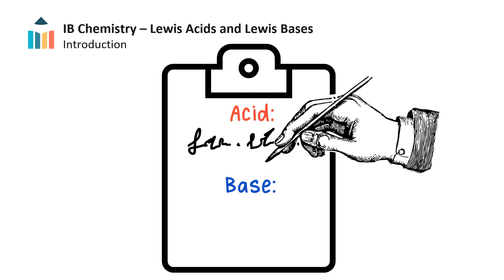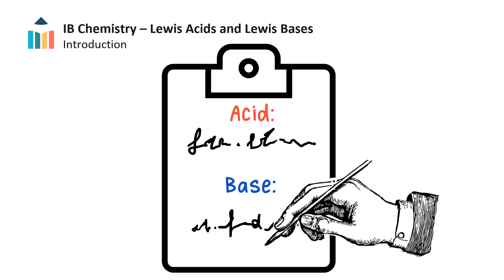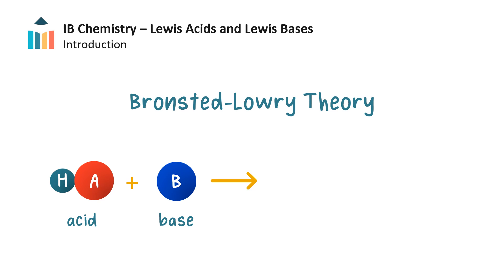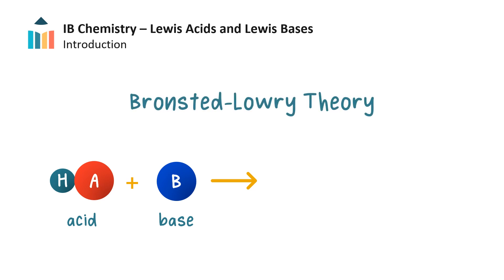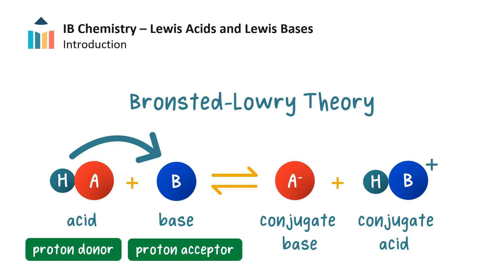The definition for an acid and a base has changed over time, and different systems describe them differently. We have already studied acids and bases using the Bronsted-Lowry theory, where a proton is transferred from the acid to the base to form a conjugate base and a conjugate acid. A Bronsted-Lowry acid is a proton donor and a Bronsted-Lowry base is a proton acceptor.